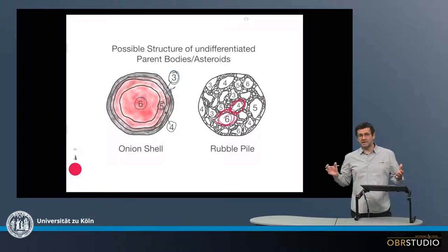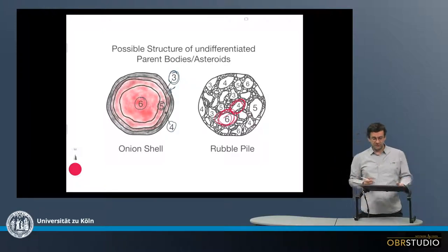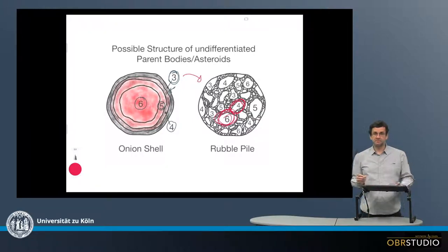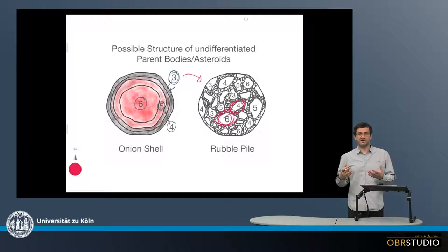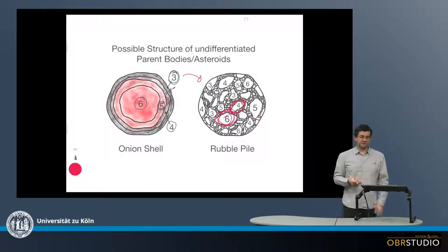These are most likely second generation asteroids, and they might originate from such onion shell asteroids that got disrupted, fragmented, and then reassembled.